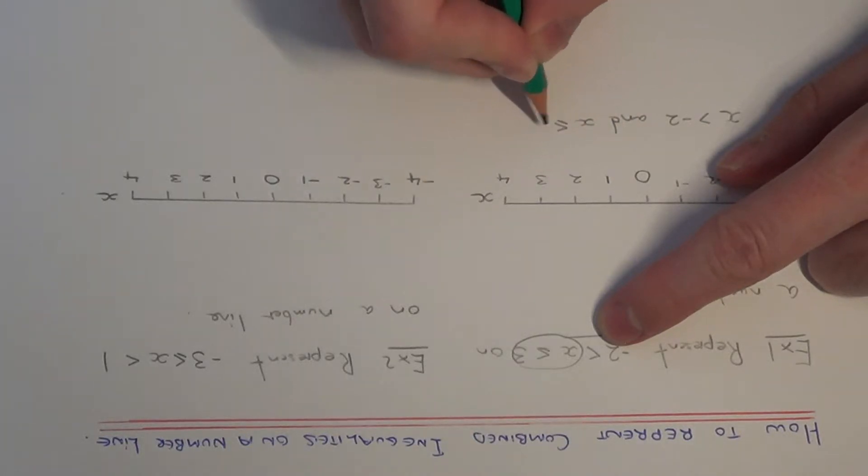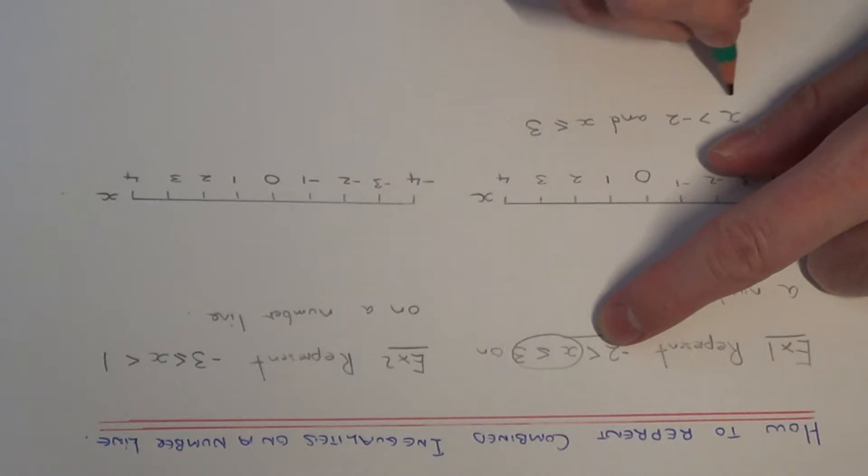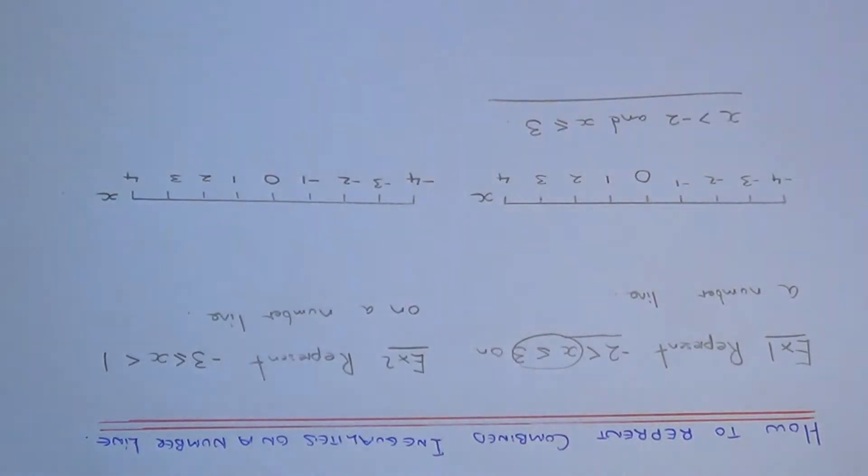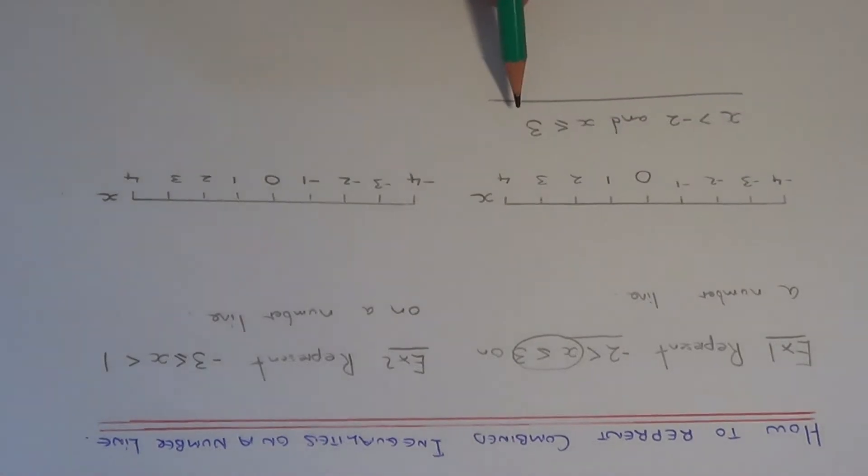We don't have to do anything with this as this makes sense. So x has to be basically a number which is more than minus 2 and less than or equal to 3.